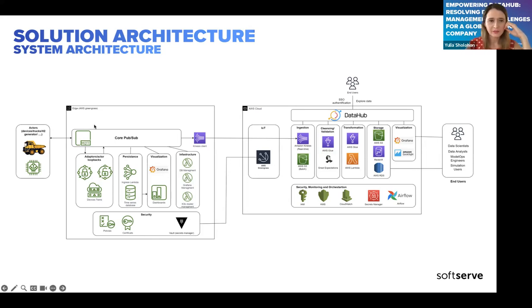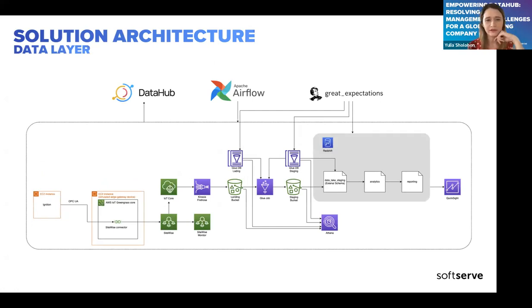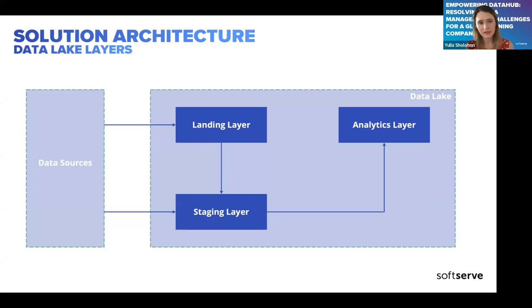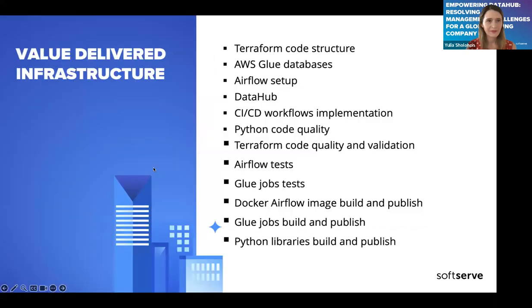Here is a more detailed description of the data lake that was implemented. It consists of three layers and data moved from landing to staging to analytics. Data from different files comes to the landing area, gets processed to staging, and then to analytics. Data from databases goes directly to the staging layer and then gets processed to analytics.